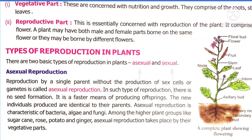Sexual reproduction is a process in which two parents are involved for the production of sex cells or gametes, whereas asexual reproduction involves a single parent without the production of sex cells or gametes. In asexual reproduction there is no seed formation. It is a faster means of producing offspring; however, the new individuals produced are identical or similar to the parent plant.